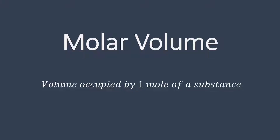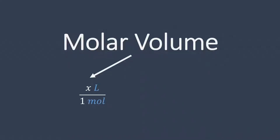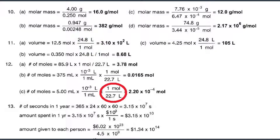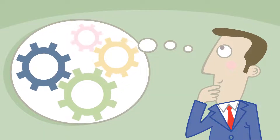Molar volume is the volume occupied by one mole of a particular substance. We can set it up as a ratio of a given amount of volume per one mole, or flip it around as one mole over a given amount of volume in liters. In a chapter on mole conversions, it really depends on the question and what units you want to cross out, so feel free to choose between the two ratios.